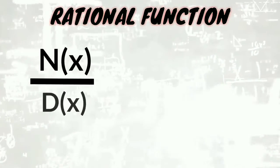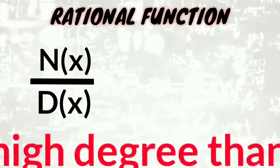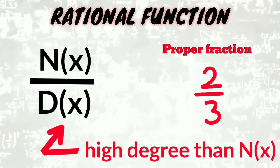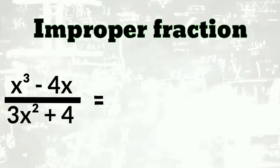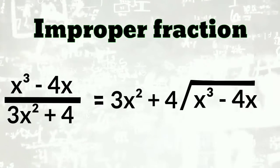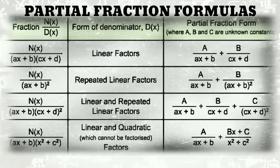When you talk about rational function, it is a ratio of two polynomials, like N(x) over D(x). Now, when the degree of the denominator D(x) is greater than the numerator N(x), we know that it is a proper fraction. Otherwise, it is improper. When you encounter an improper fraction, you must use the long division method to help you solve the problem. Here are some formulas that we use in decomposing fractions. Familiarize this form, and then we can proceed to our examples.